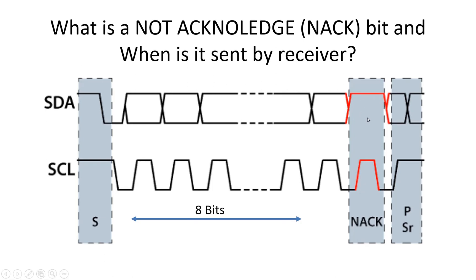Once a NACK condition occurs on the I2C bus, the master can take two actions. One option is to terminate the communication by sending a stop condition, indicated by the symbol P. The other option is for the master to initiate another transaction by sending a repeated start symbol. Repeated start is a new term we will cover in upcoming videos.